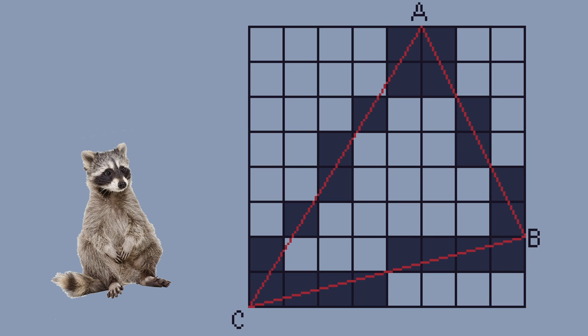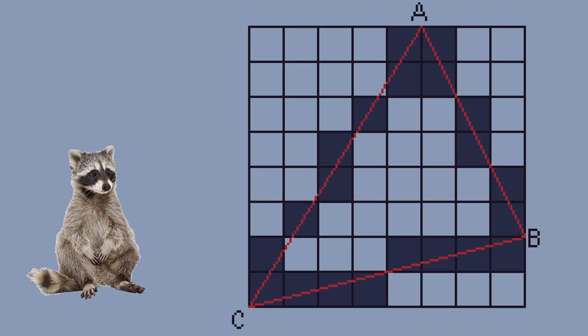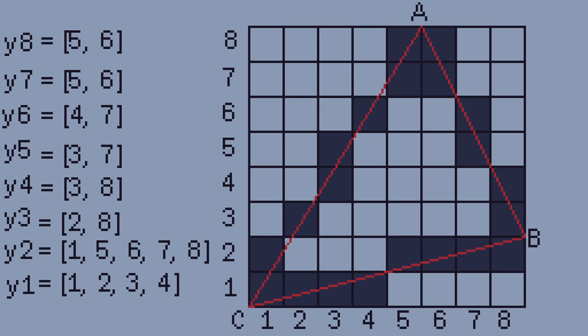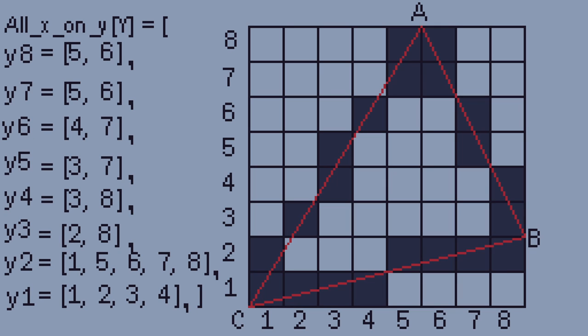So in order to fill in the triangle we're going to need to start by saving all the pixels on our lines in a list. To do this we will save each X position with the same Y position. So for Y8 there are two pixels at X5 and X6. For Y7 there are also two pixels at X5 and X6. For Y6 there are two pixels at X4 and X7 and so on until we have done this for all of our pixels. Once we have all of our list of X values we can save all of these in one big array. We can now access all of the X coordinates around the edge of the triangle with our associated Y coordinate.